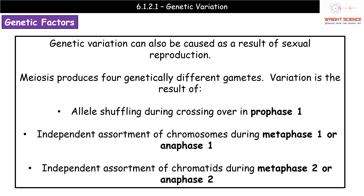We also need to consider what happens in sexual reproduction itself, because this is another key source of genetic variation. From our earlier work on meiosis, we end up with four genetically different gametes. We get variation in those gametes because of a selection of events occurring at specific phases. Because meiosis goes through two divisions, the numbers are important — don't just write 'metaphase'; be specific about whether it's metaphase 1 or metaphase 2, anaphase 1 or anaphase 2.